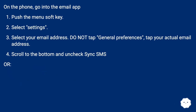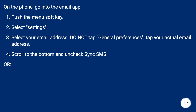On the phone, go into the email app. Push the menu soft key. Select Settings, then select your email address. Do not tap General Preferences — tap your actual email address. Scroll to the bottom and uncheck Sync SMS.